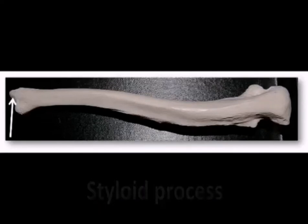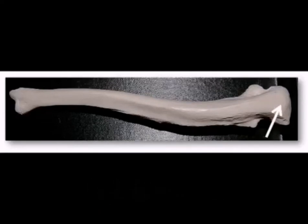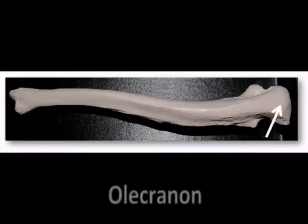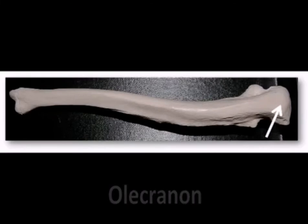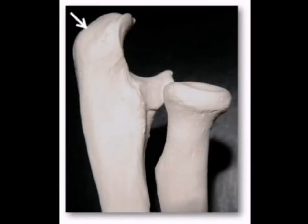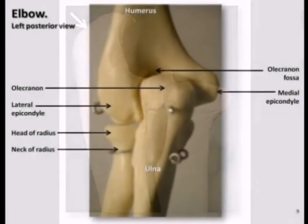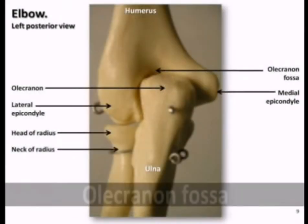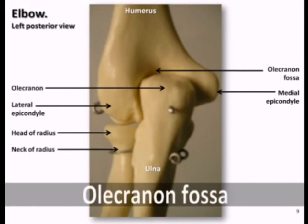On the proximal end of the ulna is the olecranon, which is the hard bony process that forms the elbow. The olecranon is also called the olecranon process. The olecranon articulates with the humerus by hooking into the olecranon fossa, a deeper depression located at the distal end of the humerus.